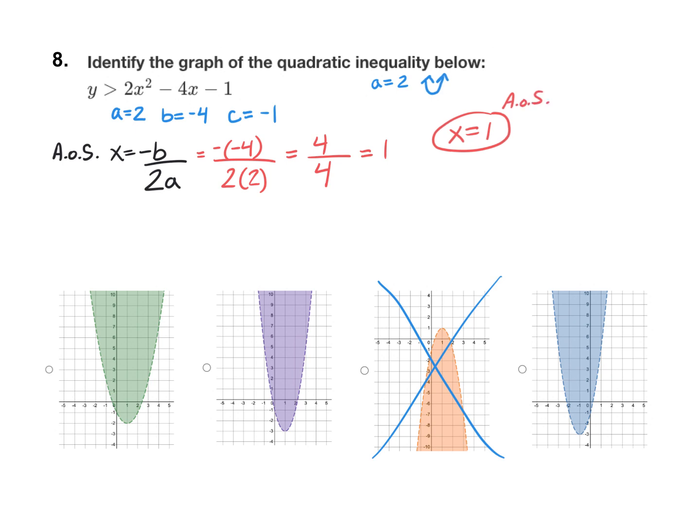If we look at our choices here, the green graph has its axis of symmetry at 1. So does the purple graph, so it could be those. The blue graph seems to have its axis of symmetry at negative 1. So I'm going to eliminate that.